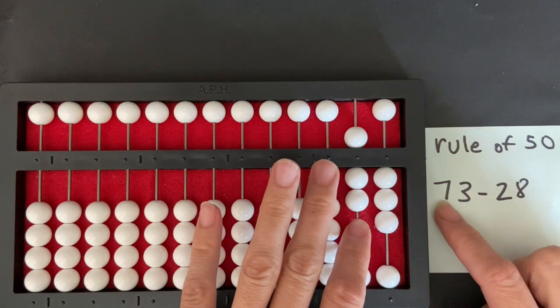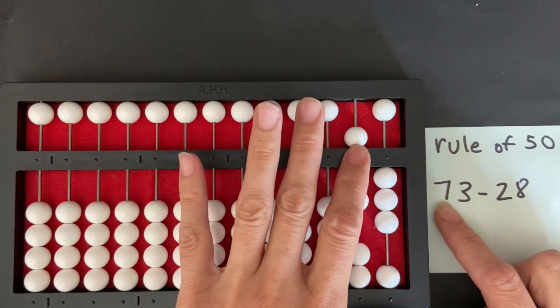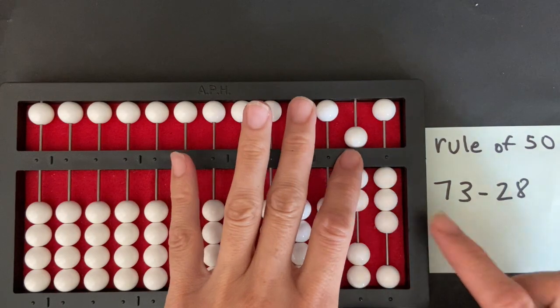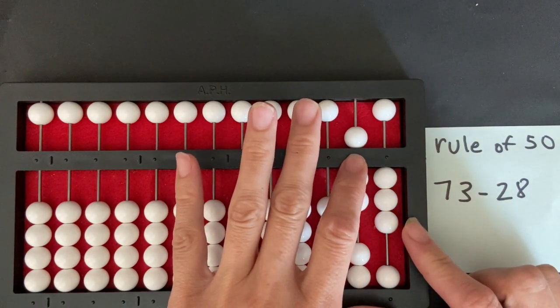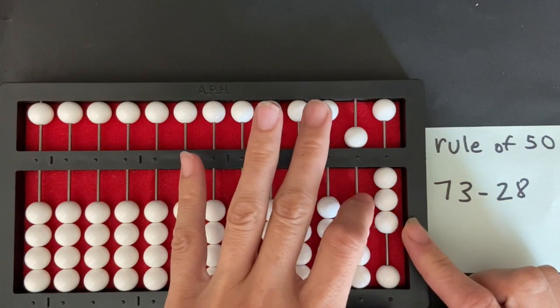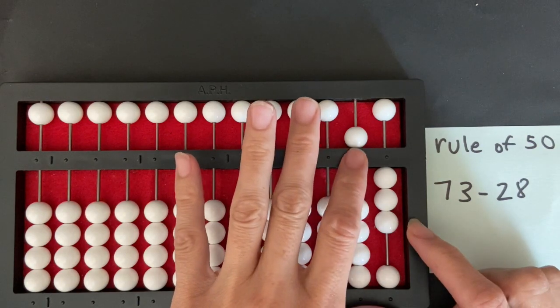Now I'm going to start in the tens column and subtract 2. So I push 1, 2 away from the counting bar. I don't have to do any exchanges yet.